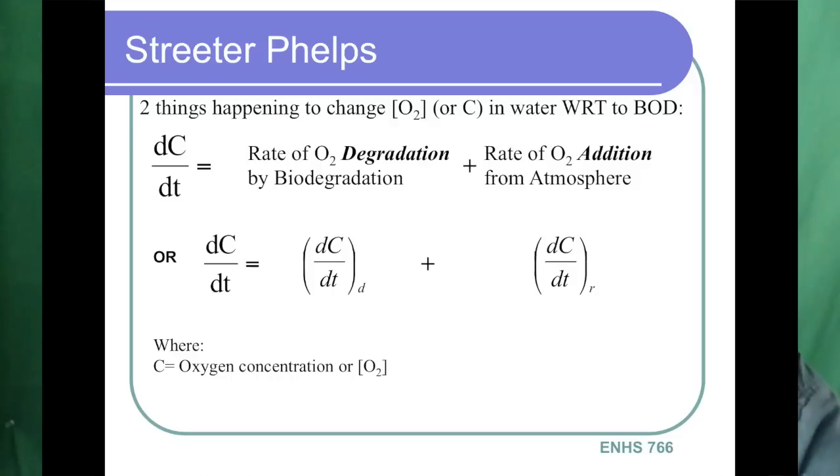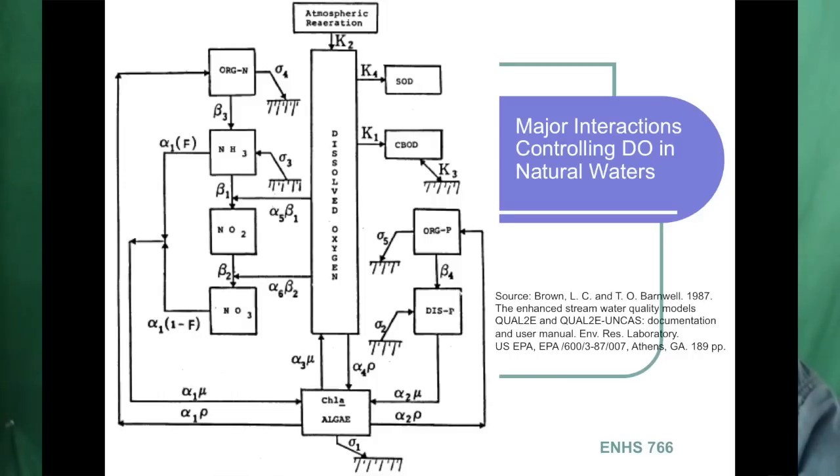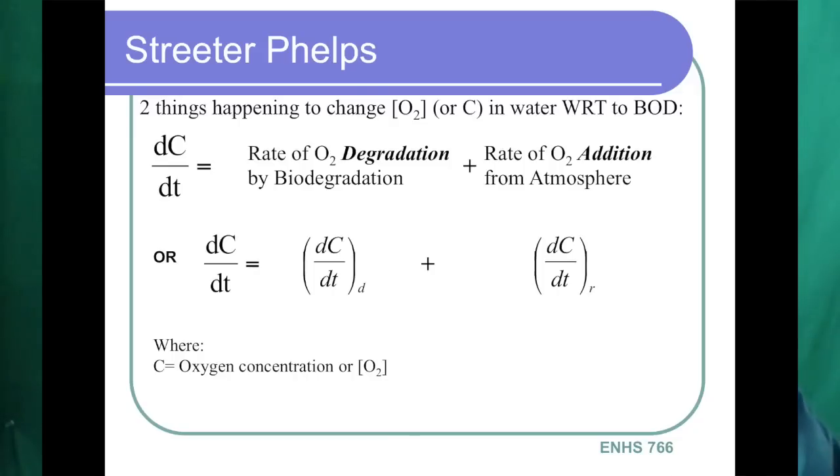Let's have a look at the Streeter-Phelps model. In the Streeter-Phelps model, there are two things that are happening. On the one side, you have a rate of degradation, biodegradation of the BOD, or the ultimate oxygen demand in your water column. And on the other hand, you have a rate of O2 addition from the atmosphere. We're simplifying, we're not including the rate of addition from photosynthesis. But you have basically two terms: delta C over delta T in terms of degradation, and delta C over delta T in terms of re-aeration. So this one will be a negative, and this will be a positive term, where C equals our DO concentration.